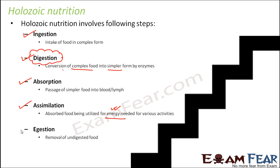And finally, ejection. Just as ingestion means taking in, ejection means giving out. Whatever food is not digested — all that undigested food is thrown out of the body. Not all food gets digested because digestive enzymes have certain limitations and can break down only some substances. Certain components in the food cannot be broken down, so they cannot be absorbed or assimilated, becoming waste and thrown out as part of ejection. These are the five important steps involved in holozoic nutrition, and we are going to discuss each step in detail one by one.